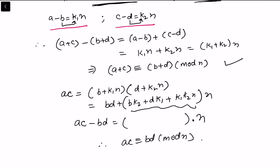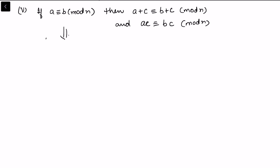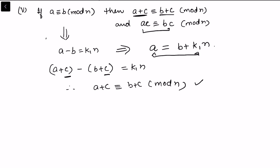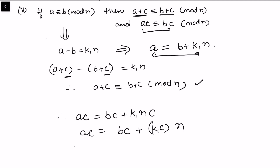For property five, with a minus b equals k1·n, we want a plus c and b plus c. Adding c on both sides: (a plus c) minus (b plus c) equals k1·n, so a plus c is congruent to b plus c modulo n. For multiplication, from a equals b plus k1·n, multiplying both sides by c: ac equals bc plus k1·c·n equals bc plus (k1·c)·n. So ac is congruent to bc modulo n.